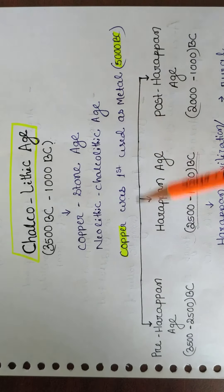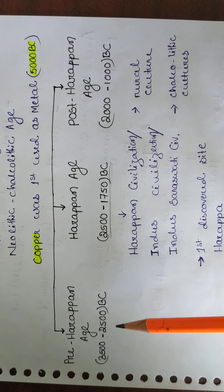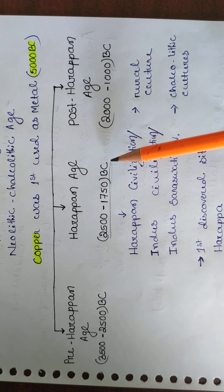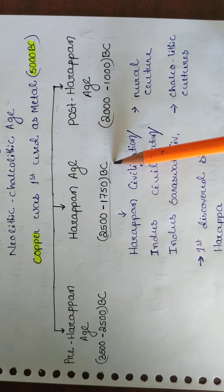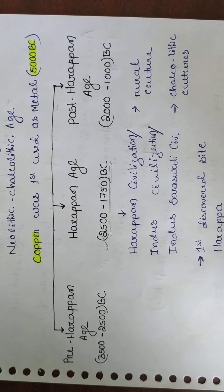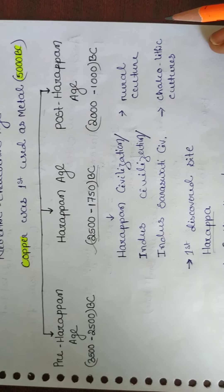The Chalcolithic Age is divided into three stages: Pre-Harappan, Harappan, and Post-Harappan. The time period of Pre-Harappan is 3500 to 2500 BC, the Harappan Age is 2500 to 1750 BC, and Post-Harappan is 2000 to 1000 BC. We have to remember the Harappan Age time period: 2500 BC to 1750 BC.